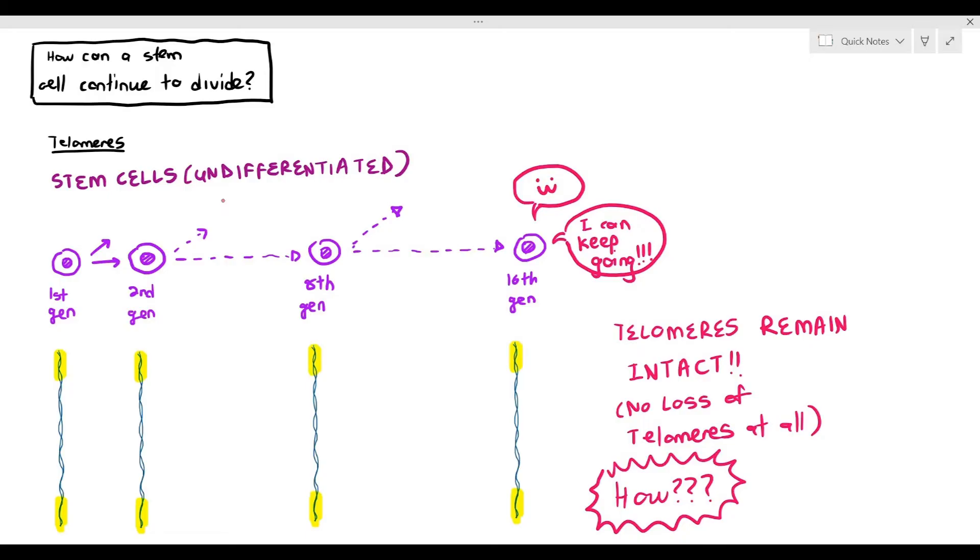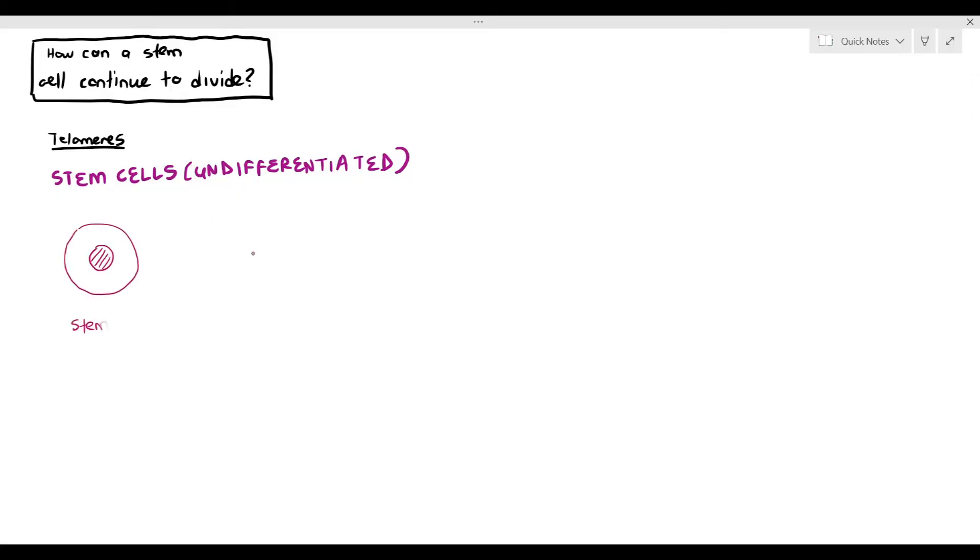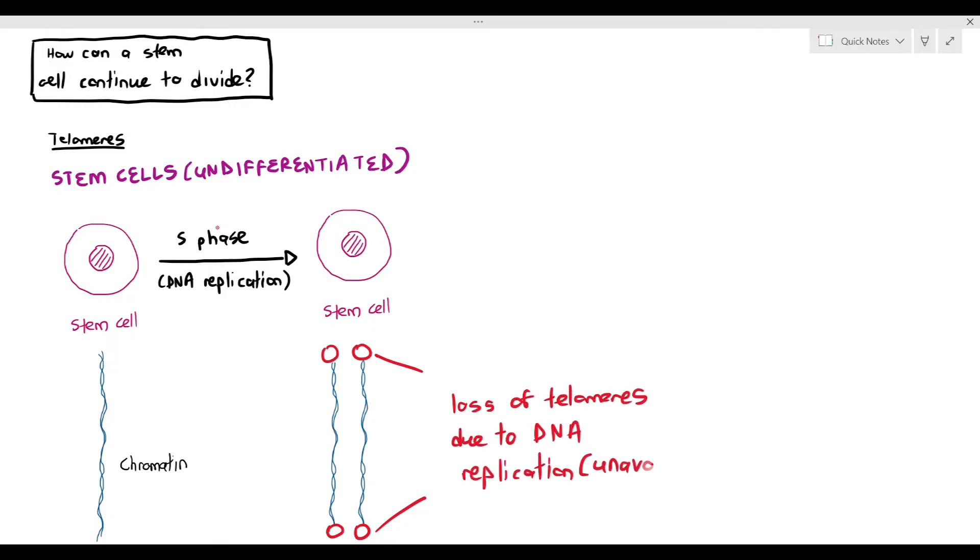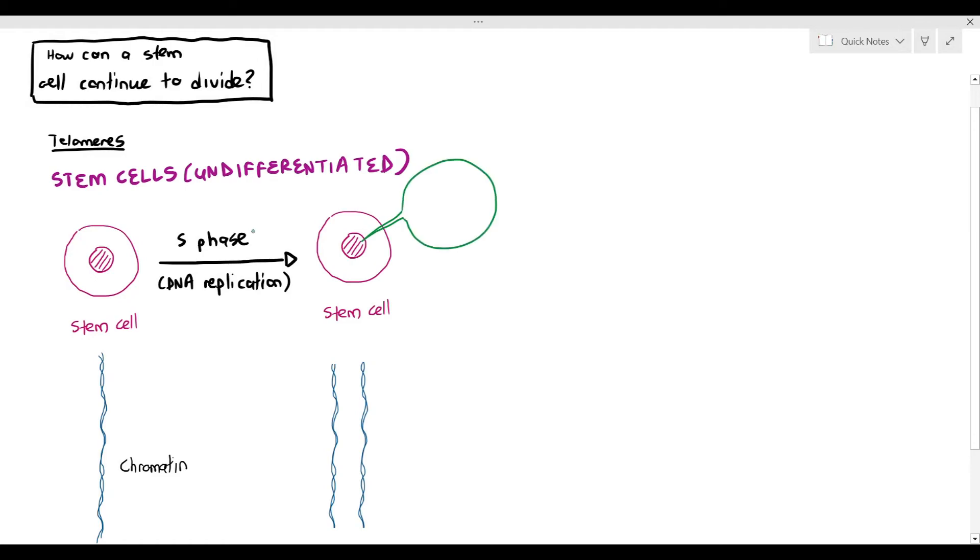Why is there this so-called double standards in stem cells compared to the specialized cells that we saw earlier? The answer lies within a very important enzyme called telomerase. Now, in a stem cell, it has the chromatin and when it undergoes the S phase, the DNA replication, still within the interphase, by the way, notice that once the chromatin is replicated, you notice that there is actually a loss of telomeres.